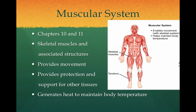The muscular system includes the skeletal muscles and their associated structures. This system provides movement, provides protection and support for other tissues, and generates heat that helps to maintain body temperature. We will study the muscular system in Chapters 10 and 11.